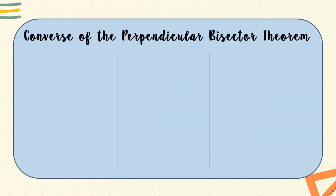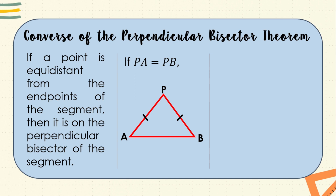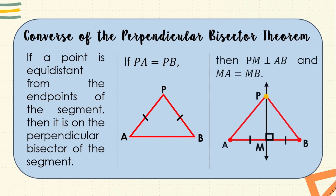The converse of the perpendicular bisector theorem states that if a point is equidistant from the endpoints of a segment, then it is on the perpendicular bisector of the segment. To illustrate: if PA equals PB, then PM is perpendicular to AB and MA equals MB. Since point P is equidistant from the endpoints of segment AB, it lies on the perpendicular bisector PM.